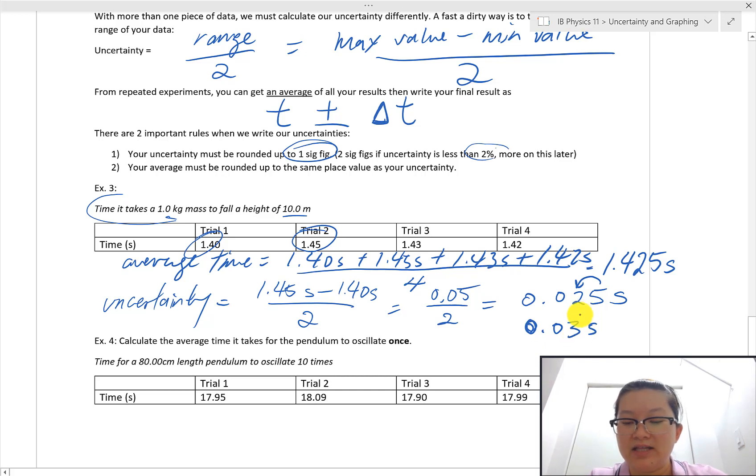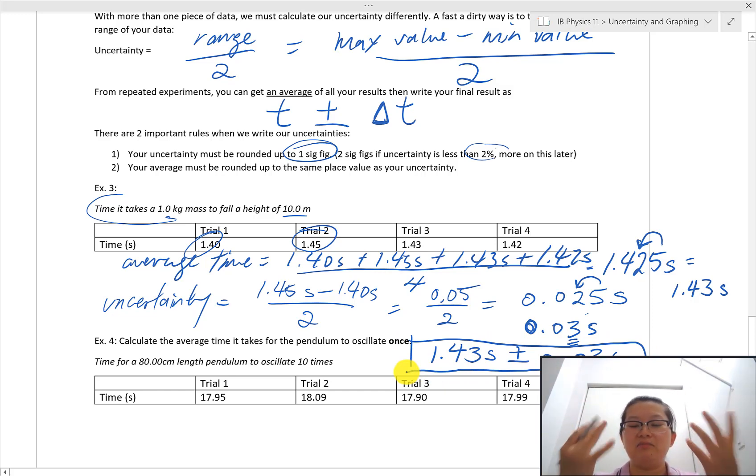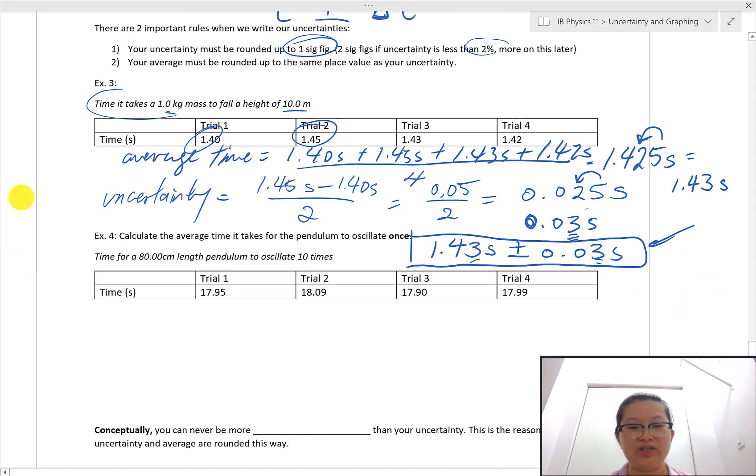And because my uncertainty is in the hundredths place value, I need to make sure my average is rounded the same way, which is exactly number of sig figs we had to begin with. But that's not always the case. So we always have to check after we get the uncertainties first. So rounding this one up, we get 1.43 seconds. So then I'm going to write my final answer here, 1.43 seconds plus minus 0.03 seconds. And I'm going to box it like that. So whenever you're doing a lab, and then you are writing out your final number for that particular repeated set of experiments, this is the correct format. This is what I like to see. I check the units and I check whether or not these place values are in agreement.